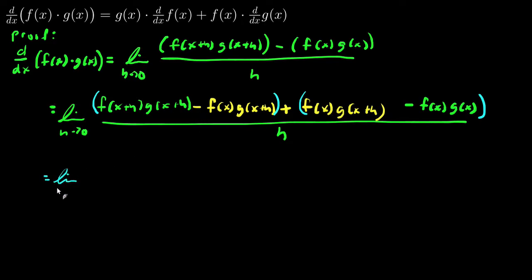The limit as h approaches zero. In here, both of the terms in the numerator have a g(x+h). So, I'll factor that out. So, I have g(x+h) times f(x+h) minus f(x) all over h.